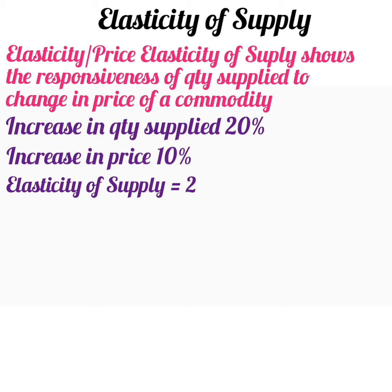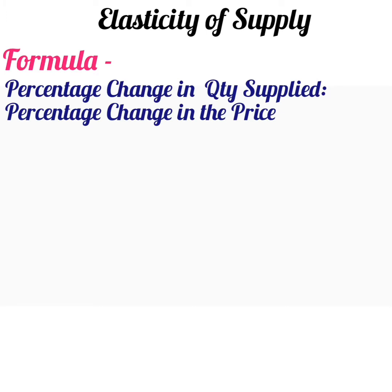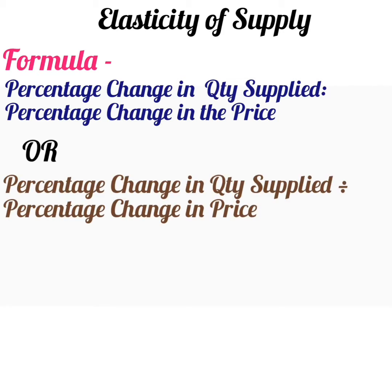Elasticity of 2 indicates that if the price of the commodity increases by 1 rupee, then the quantity supplied will increase by 2 units. Whereas, if the price of a commodity decreases by 1 rupee, then the supply will decrease by 2 units. This is how you interpret the value of elasticity. The formula: elasticity of supply is equal to percentage change in quantity supplied divided by percentage change in price of the commodity.